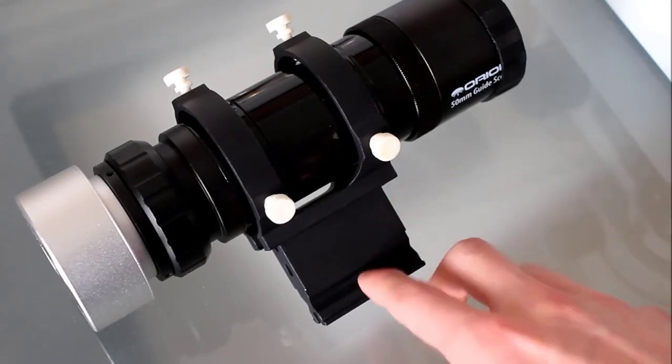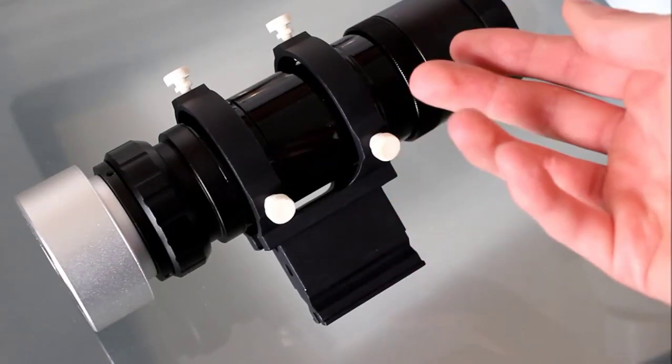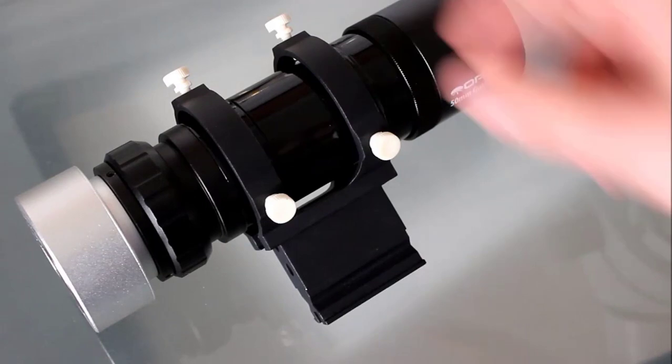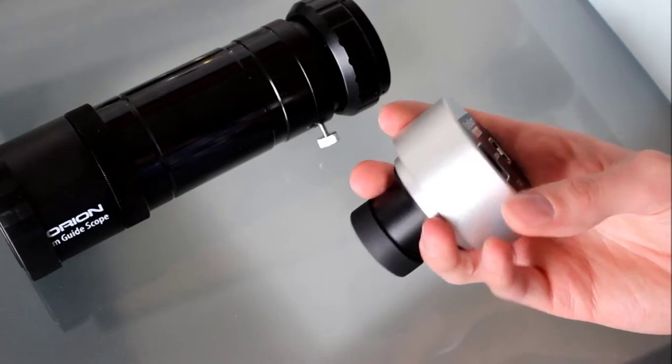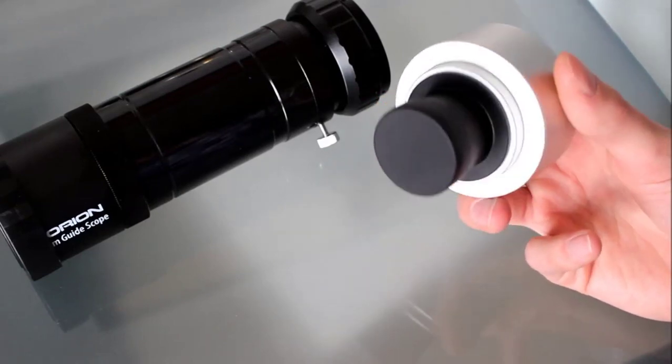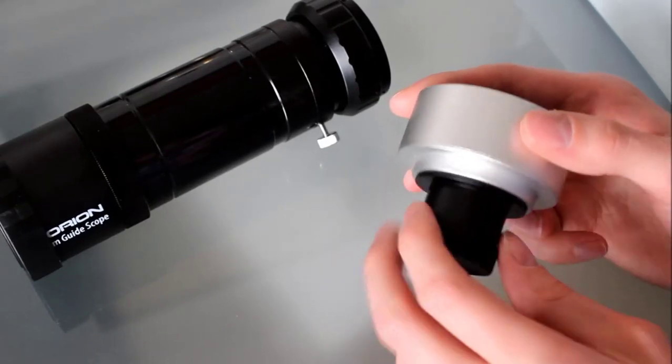The Orion 50-millimeter guide scope fits in pretty much any 50-millimeter guide scope rings. So these are actually Explore Scientific rings, and it fits in there just fine, as it should.